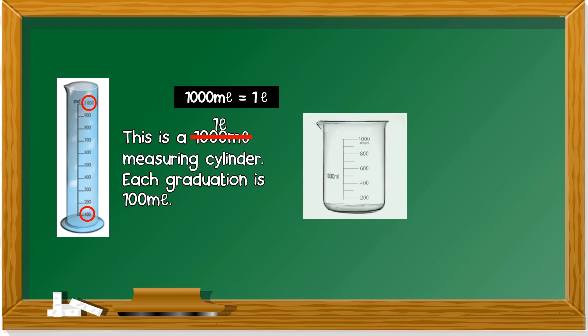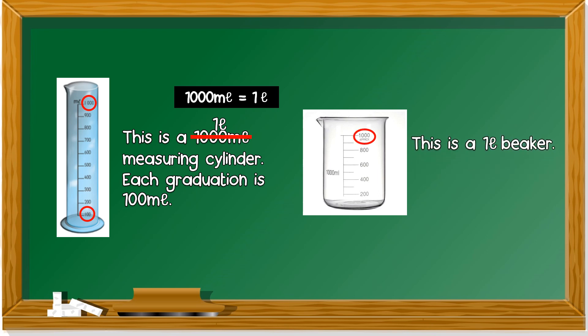Is this a beaker or a measuring cylinder? It's a beaker because a measuring cylinder is tall and slim. And this one is shorter and bigger. So it's a 1,000 milliliter beaker. So it's a 1 liter beaker or 1,000 milliliter beaker. And each graduation is 200 milliliter.